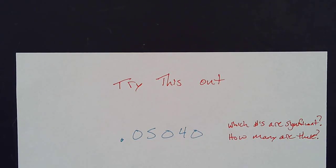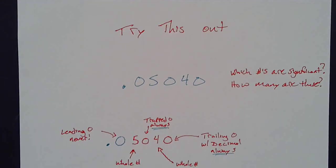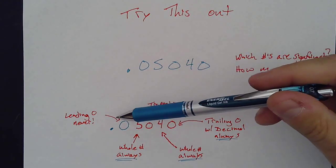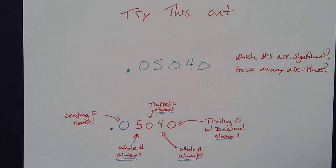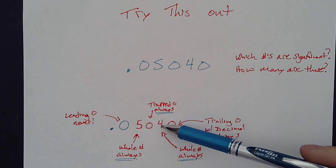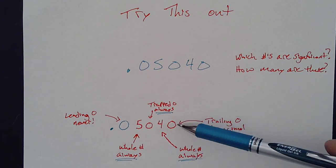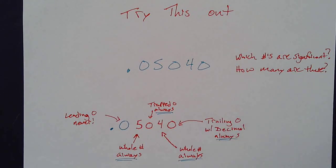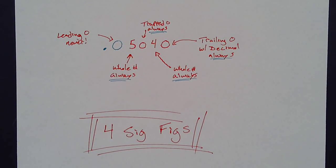And if you've already paused, here comes the answer. So look at all of this information that I'm getting from this number. There's a leading zero. That's not significant. A whole number, always significant. A trapped zero, always significant. Another whole number, always. And then we have this trailing zero. So we check there's a decimal point and they are always significant. So if you're totaling those up, we get four sig figs.